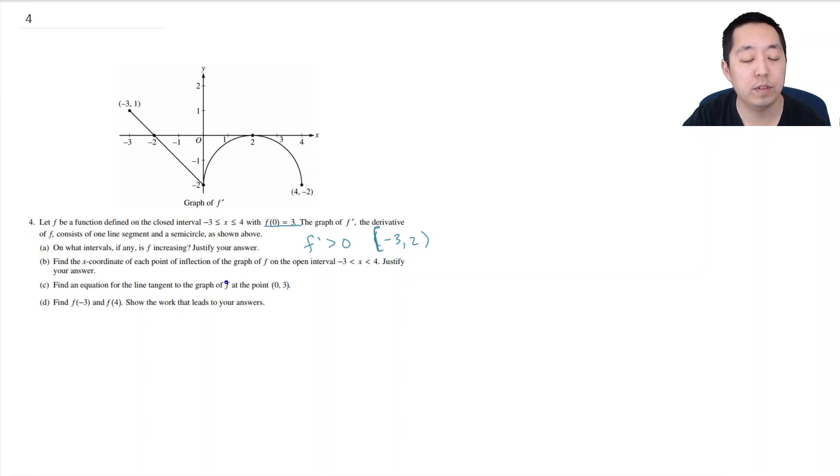Find the x coordinate of each point of inflection on the graph of f on the open interval negative 3 and justify your answer. What is a point of inflection? Point of inflection if f double prime equals 0 and changes signs. In this case f double prime are slopes of f prime because it's the derivative of f prime. So the interpretation of f double prime on this problem is that we're looking at the slopes of f prime.